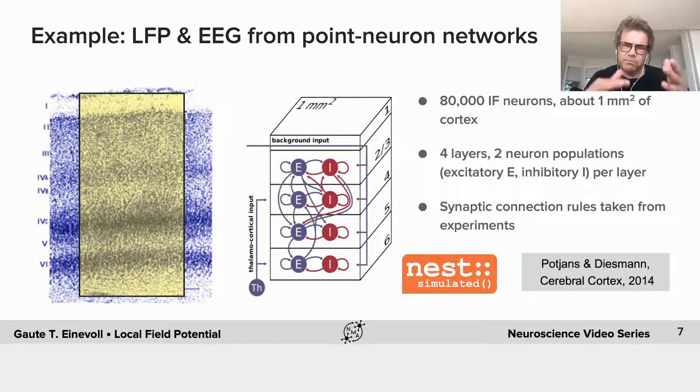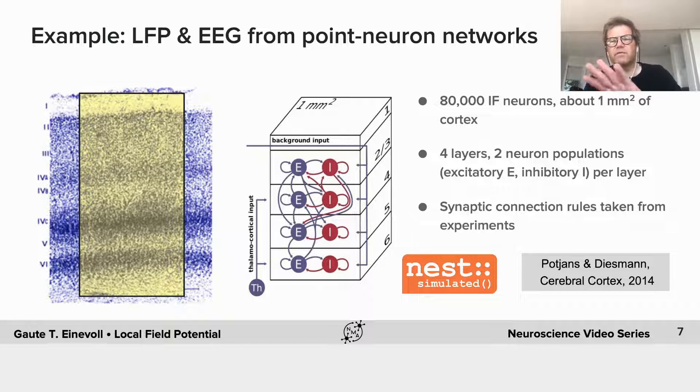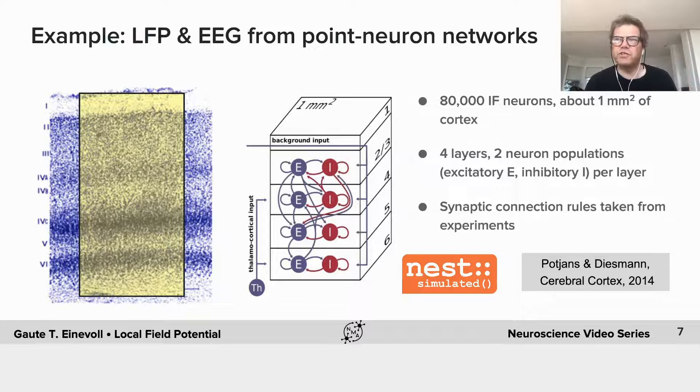But what you can do, because lots of models are developed based on these point neurons. And they can certainly be very efficient and good for making network models that has reasonable and good, interesting spiking dynamics.